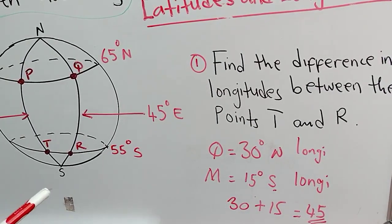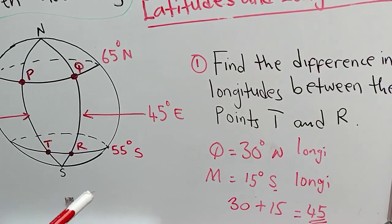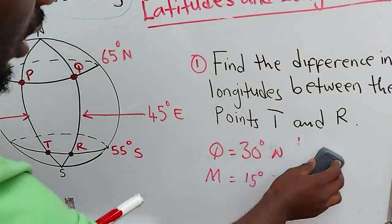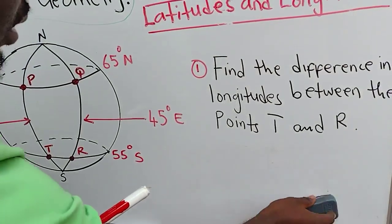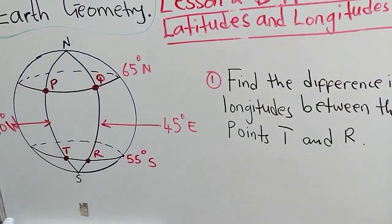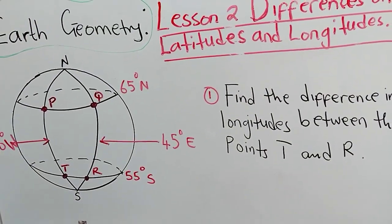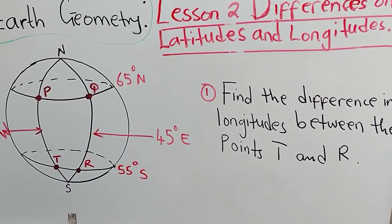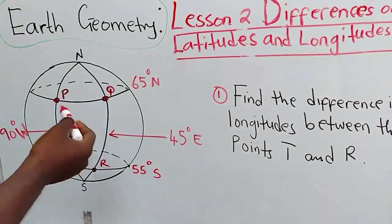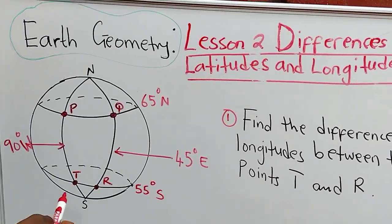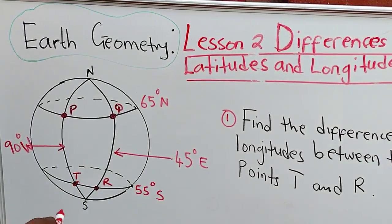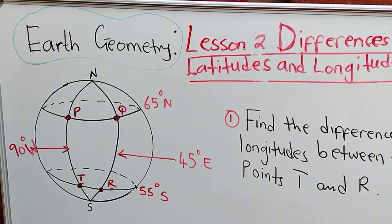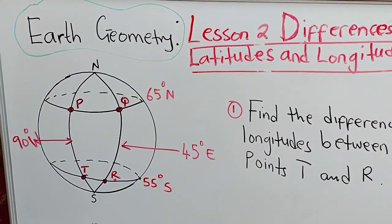For this first part, our concentration is just on longitude. Now let's look at the example. Find the difference in longitudes between points T and R. When we come back to the map module we have been given, we can locate our points. This is where point T is, and this is where point R is. They want us to find the difference in longitudes between these two points, T and R.